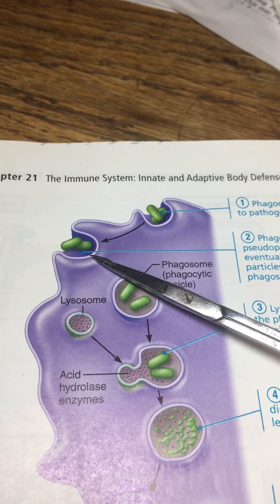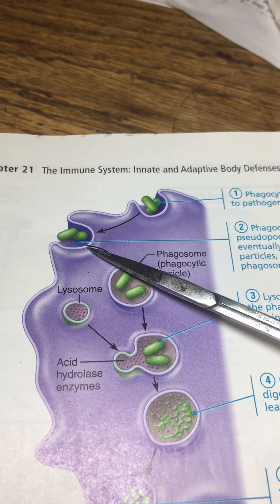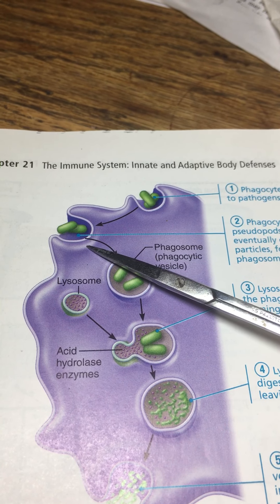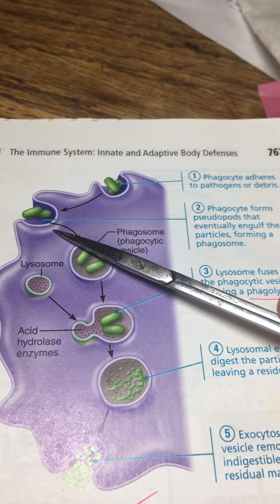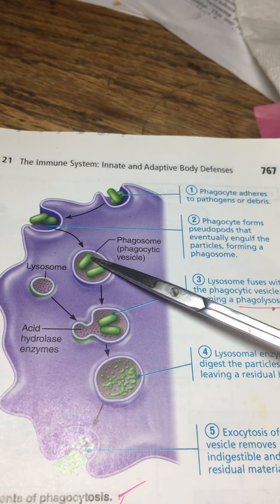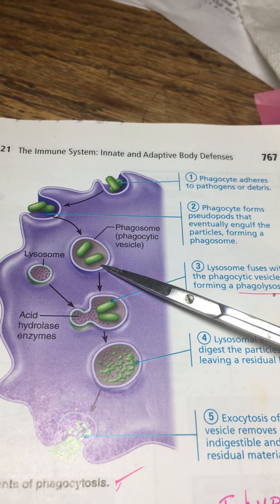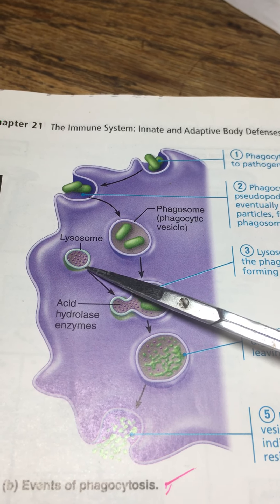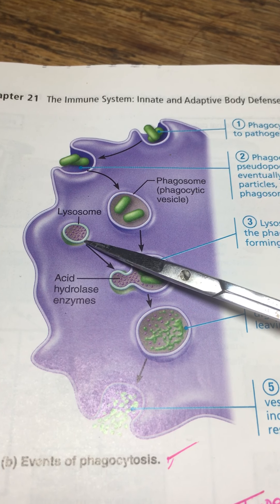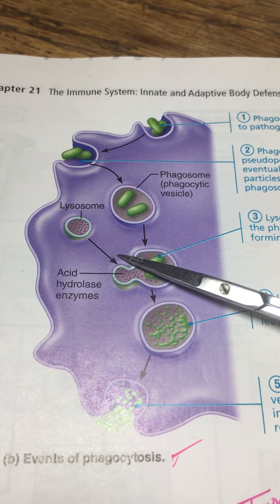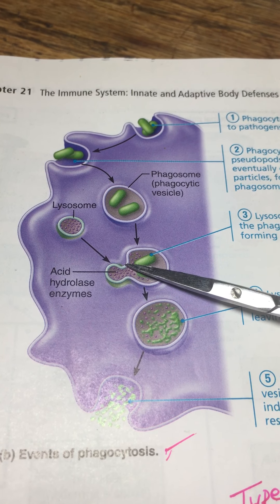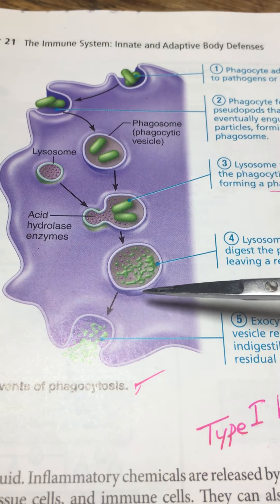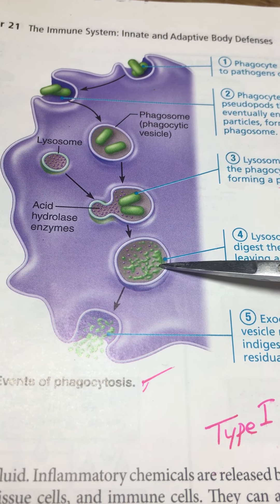We have endocytosis going on here — sometimes mediated by receptors, sometimes not. Here they just show us an endocytotic event. Here is the phagosome, so the endocytosis has occurred in close proximity to a lysosome filled with digestive enzymes. Their membranes meet up and merge, and they have a little digestive event right there. The results of digestion are shown here.